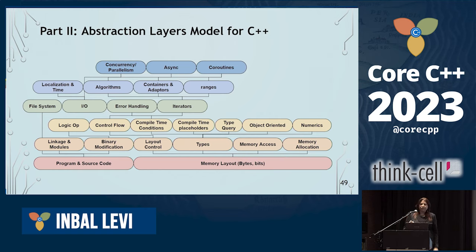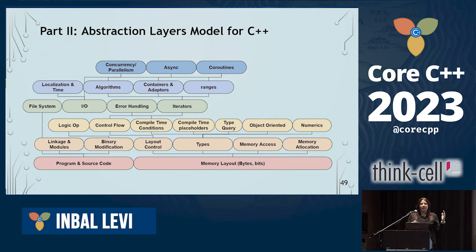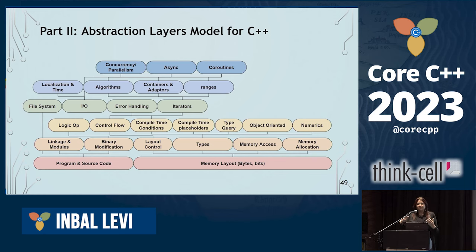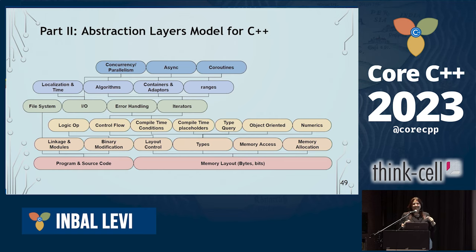I do want to mention that for standard proposals at least, processing using this tool can actually help you identify issues at the proposal stage. If the Unicode author hadn't thought about how std::format prints his types, running this tool over the proposal examples would have told them they didn't consider that.